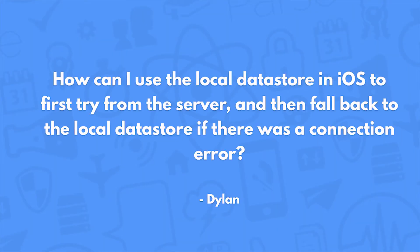How can I use the local data store in iOS to first try from the server and then fall back to the local data store if there was a connection error? That is actually exactly how you should write the code. You first query against the server, and in the error block, you query against the local data store.